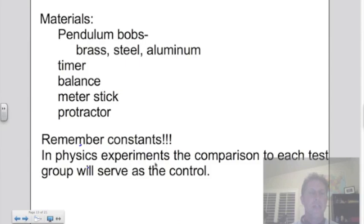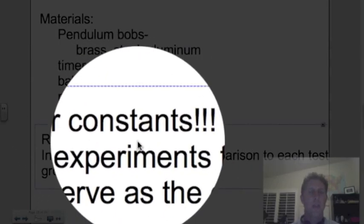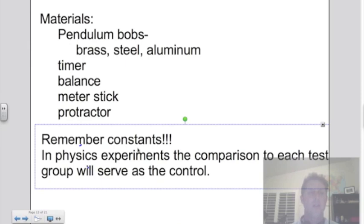Don't forget, you need to identify the constants. Make sure you understand what you're going to hold constant for each one of your experiments. In physics experiments, a comparison is really each test group against the other test group. They will serve as the control. So we don't need a separate control for these physics experiments.